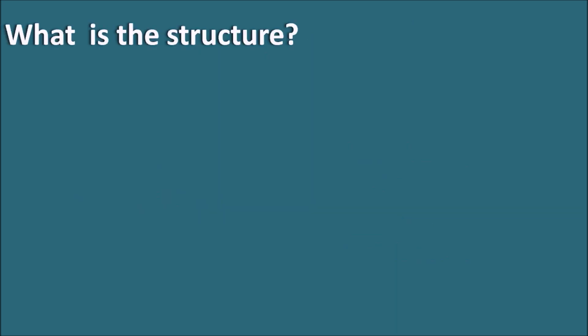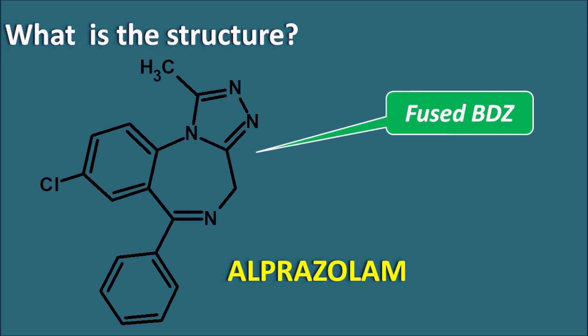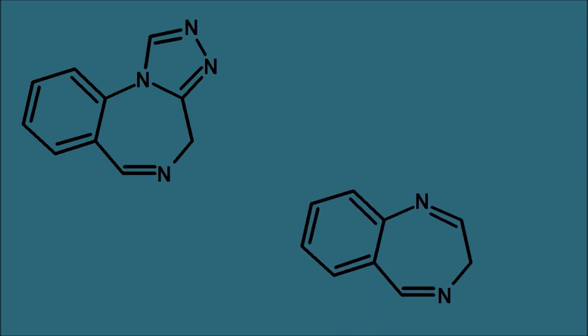First of all, let us see what is the structure of Alprazolam. Alprazolam is classified as a benzodiazepine, but if we observe, it does not have the simple benzodiazepine structure like other benzodiazepines — it has a fused benzodiazepine ring system. The basic ring system present in Alprazolam is formed from the benzodiazepine as well as a five-membered ring system.